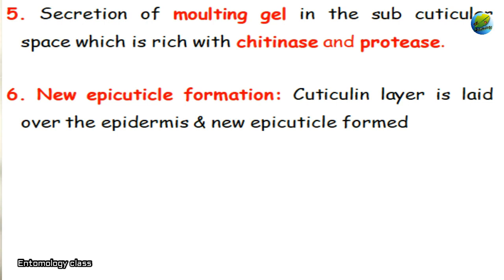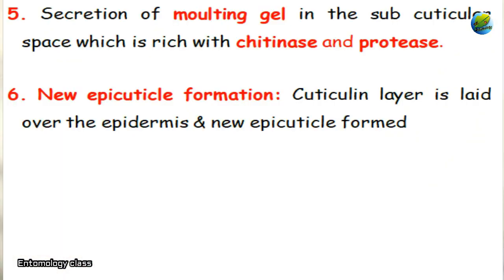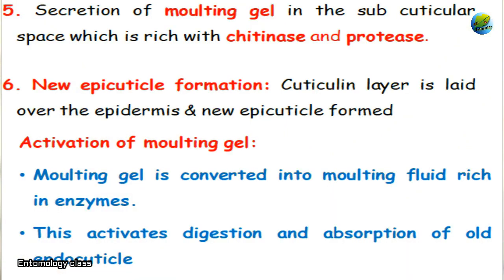The molding gel is rich in enzymes like chitinase and protease. Then the new epicuticle layer — the cuticulin layer — is secreted by the epidermis to protect it from the molding gel's activity. After secretion of the cuticulin layer, the molding gel is activated and converted into the molding fluid, also rich in chitinase and protease. This activates digestion and absorption of the old endocuticle — specifically the endocuticle, not the exocuticle.